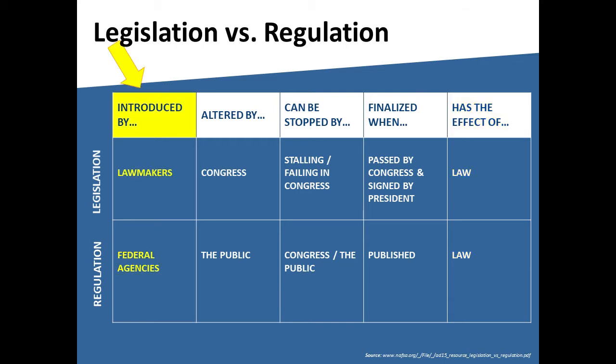For example, at the federal level, legislation is introduced by members of Congress. Any senator or congressperson can introduce legislation. At the state level, state legislatures enact legislation. Often, legislation requires federal or state agencies to draft regulations.